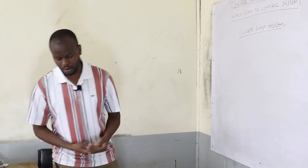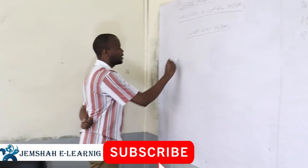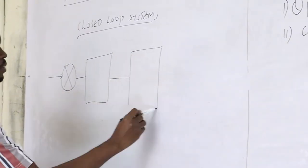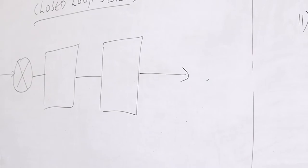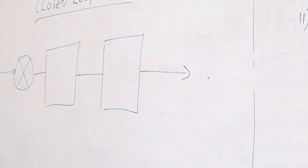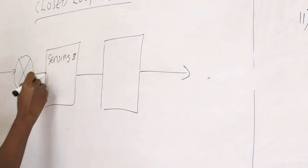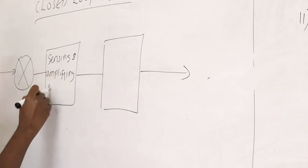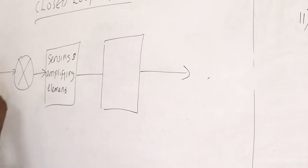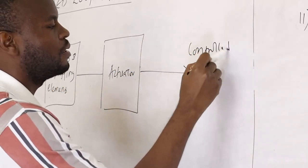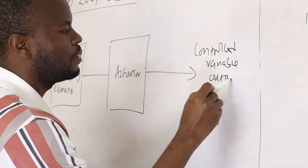In the block diagram of the control system, we have the comparator, the sensing and amplifying elements, and the actuator. Then from there, we can talk about the controlled variable output C.